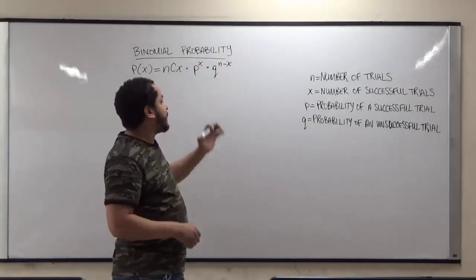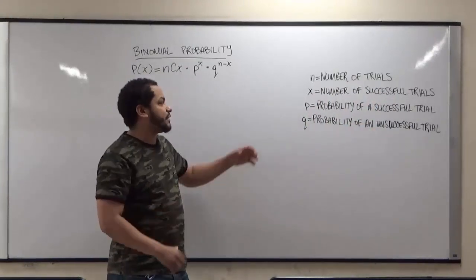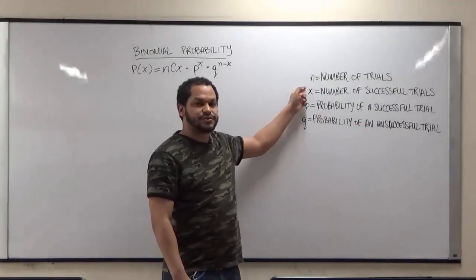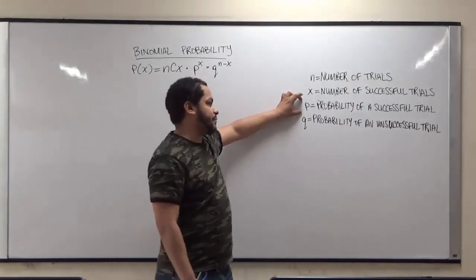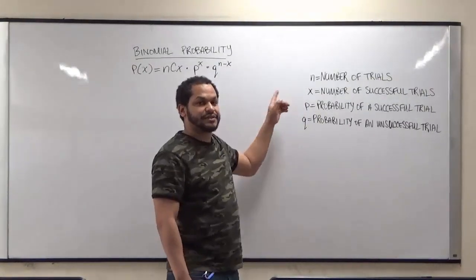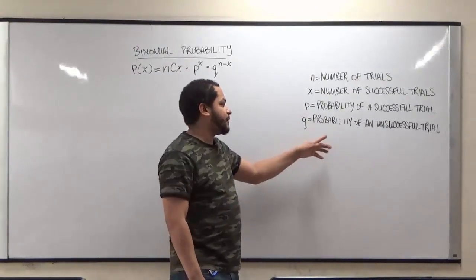Now the n again represents the number of trials in a certain scenario, while the x represents the number of successful trials that occur in n number of trials. The p here represents the probability that a trial is successful, while q represents the probability that the trial is unsuccessful.